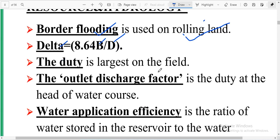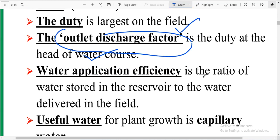The outlet discharge factor is the duty at the head of the water course. Water application efficiency is the ratio of water stored in the reservoir to the water delivered in the field. So application efficiency means how much water is delivered.